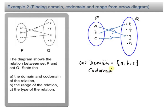So what is our codomain? Codomain is the set Q, so codomain equals the set of E, F, G, and H.